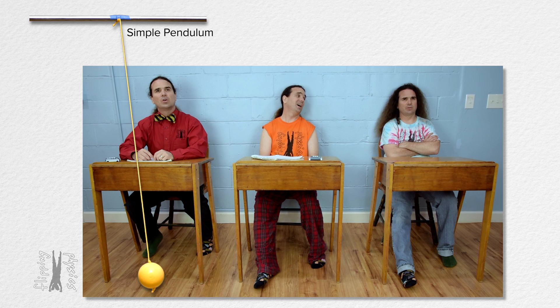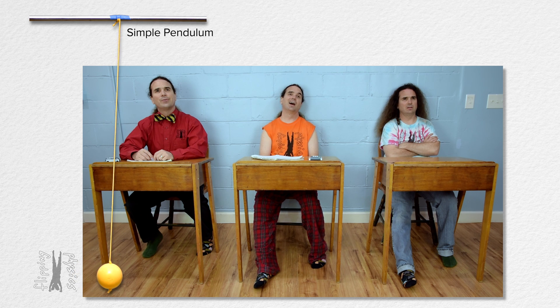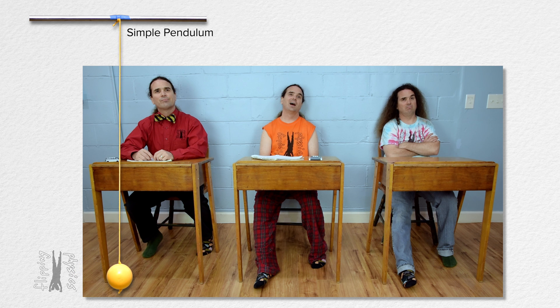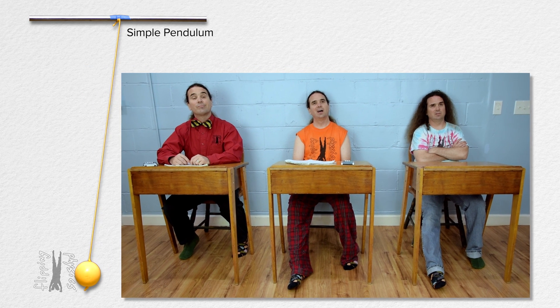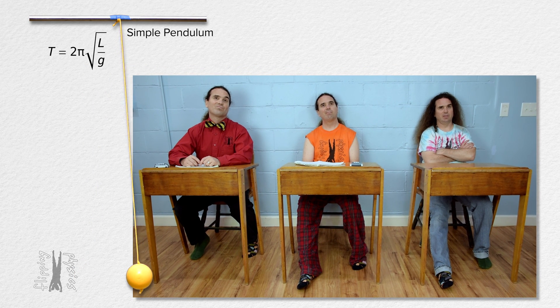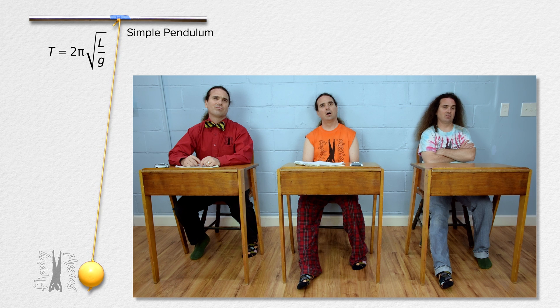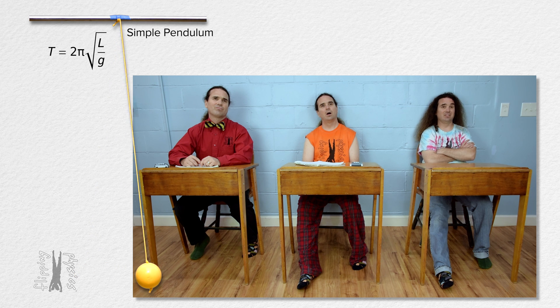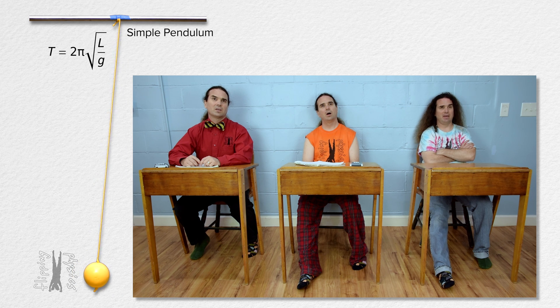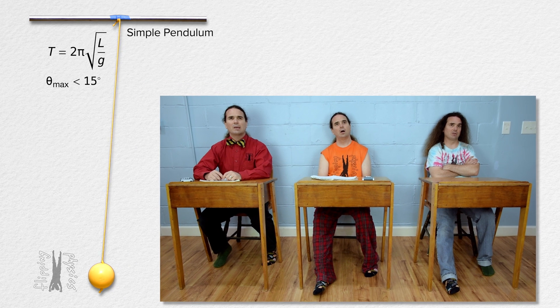What is the equation for the period of a simple pendulum? I thought we were deriving that. We are; however, we have already worked with the equation so I thought we would review it first. The period of a pendulum equals 2 pi times the square root of the quantity length of the pendulum over little g, the gravitational field strength. And this equation is only valid if the pendulum angle is less than 15 degrees.